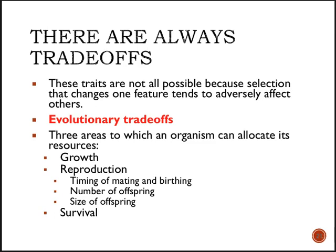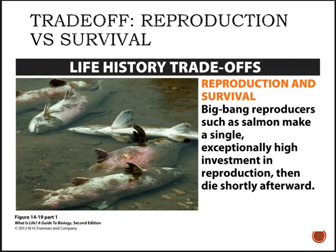The first trade-off is between reproduction and survival. Big bang reproducers like Antechinus and salmon illustrate this clearly. Salmon put a huge investment into reproduction: it takes so much energy to swim upstream and lay eggs that they die immediately afterward. They are not putting energy into survival — they are putting it all into reproducing. That is a direct evolutionary trade-off.